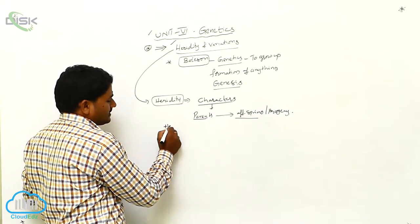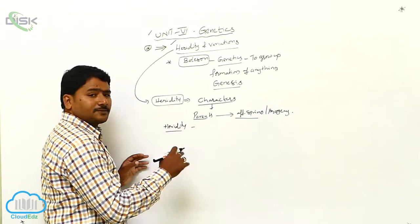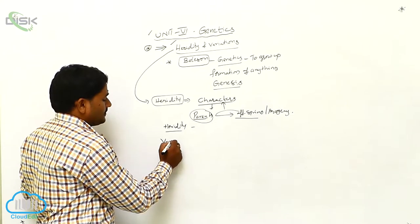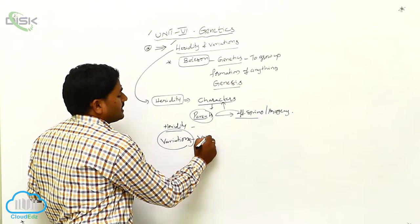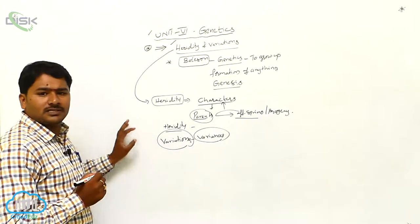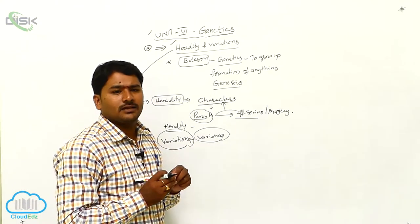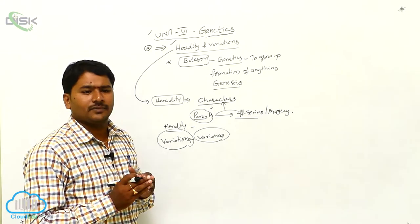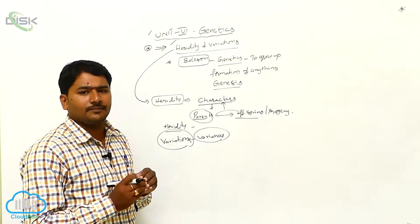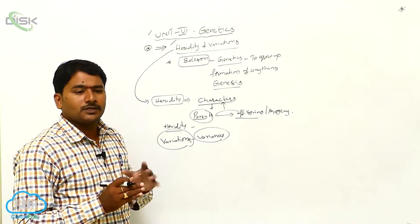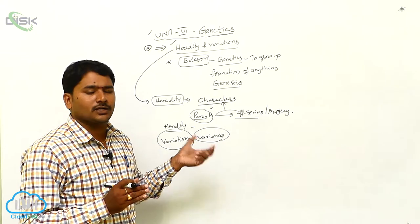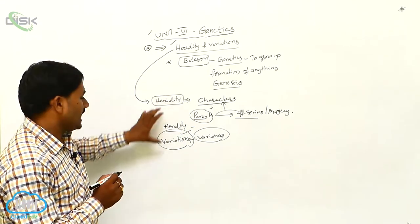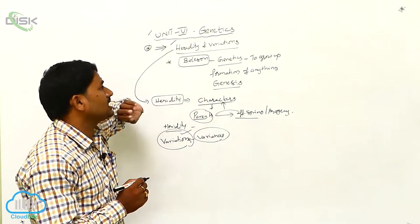What is meant by hereditary characters? The characters which are transmitted from parents to offspring are called hereditary characters. Now, what are variations? Variations are any differences in the characters shown by an individual. Due to changes in DNA, different characters in the DNA cause differences in character expression. The differences shown by the individual due to genetical changes are known as variations. When we study heredity as well as variations, that branch is called genetics.